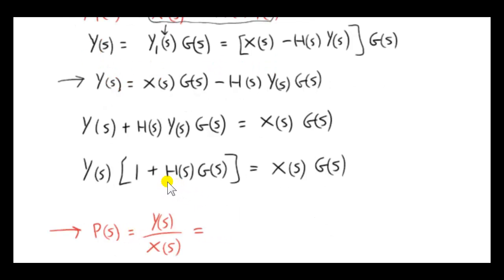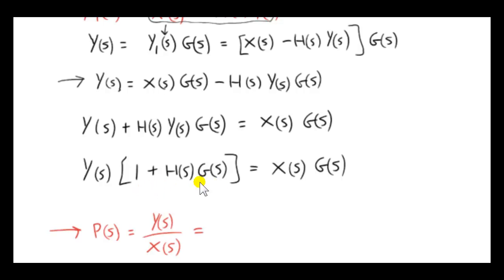So finally, we want to get the transfer function, so we want y(s) over x(s). We divide both sides by x(s) and by the quantity inside the square brackets. We divide the left-hand side by x(s) times the quantity in the square brackets, so we will get the transfer function. On the right-hand side, we get G(s) over 1 plus H(s) times G(s).